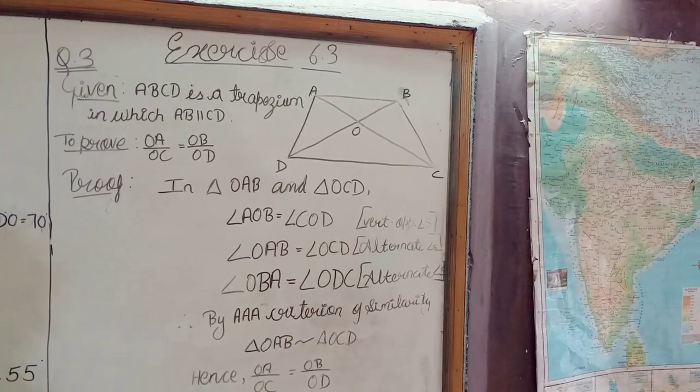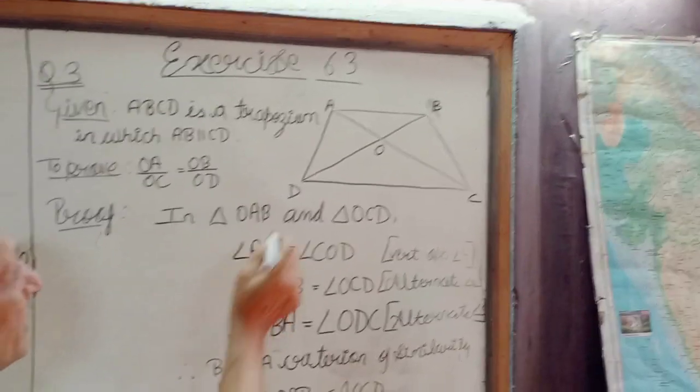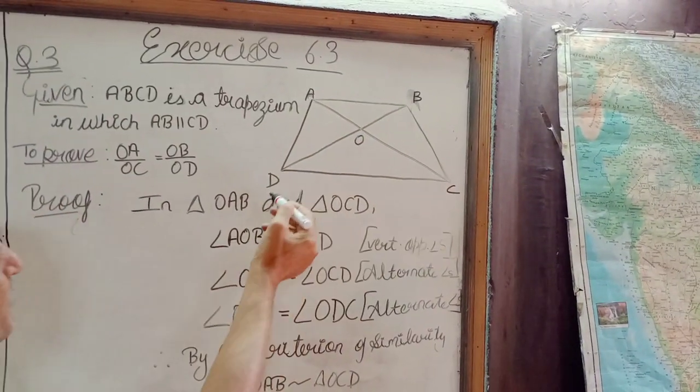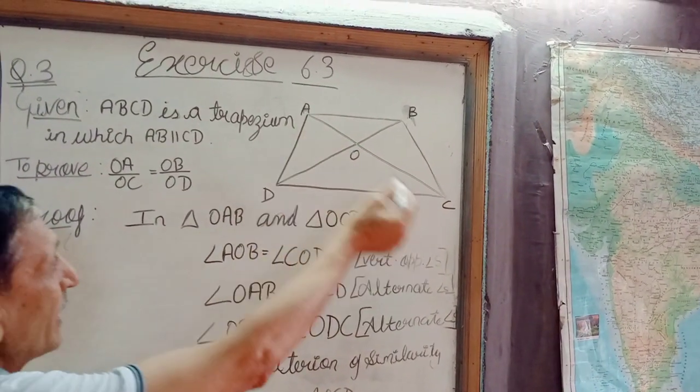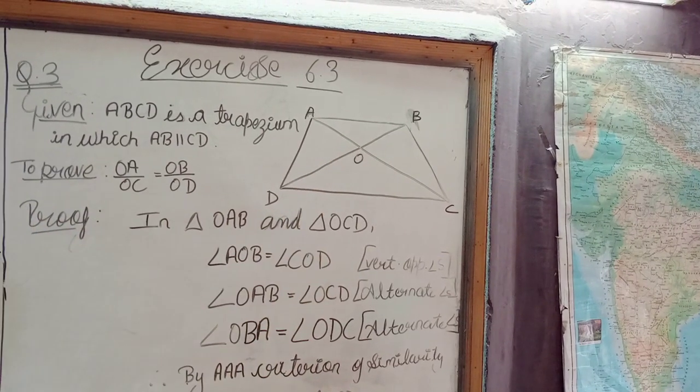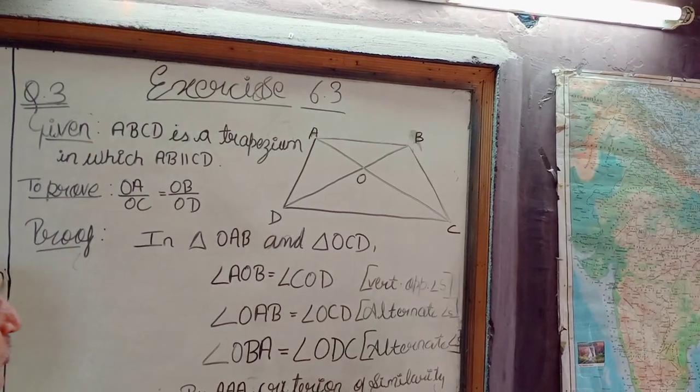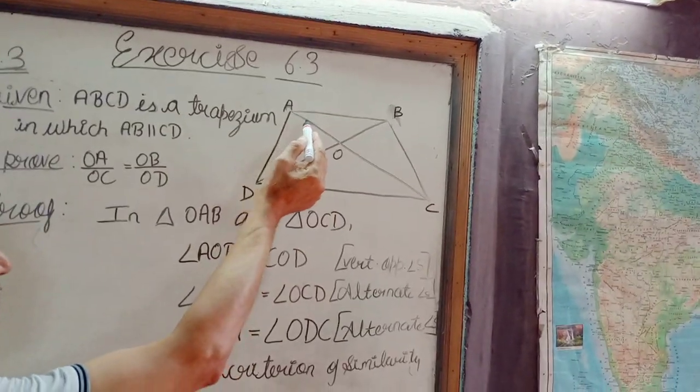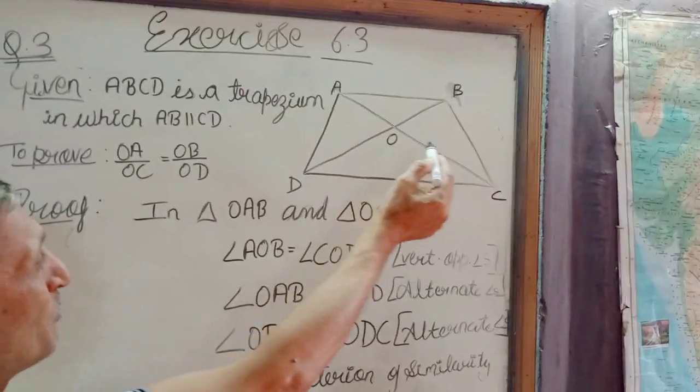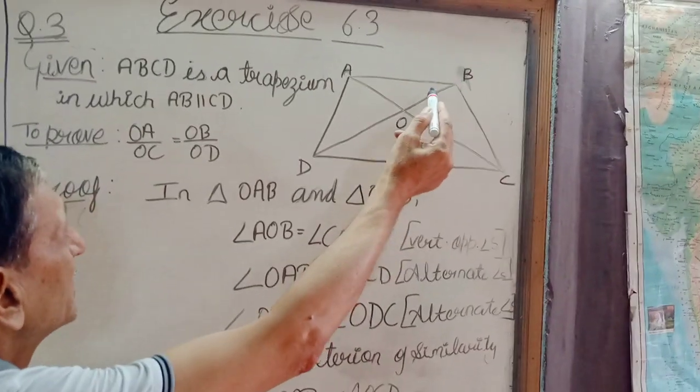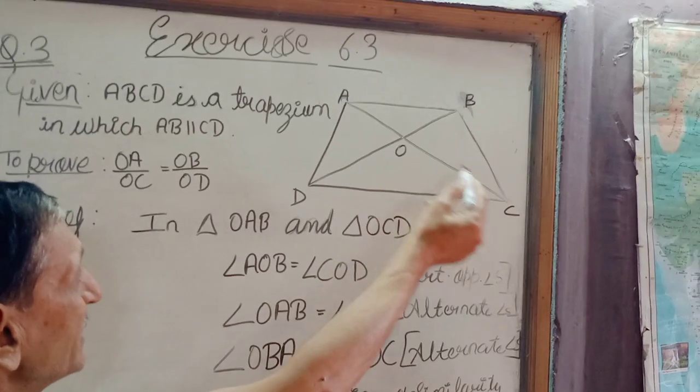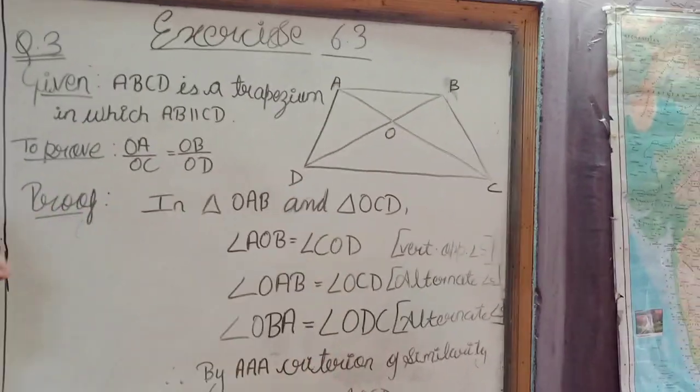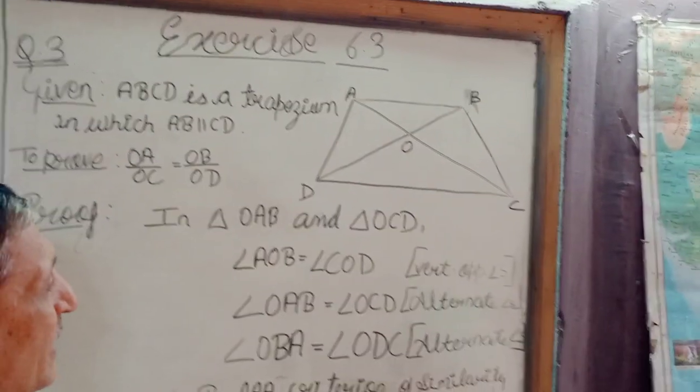We are given that ABCD is a trapezium and the diagonals intersect each other at O. So, we have to prove whether OA upon OC is equal to OB upon OD. Let's start.